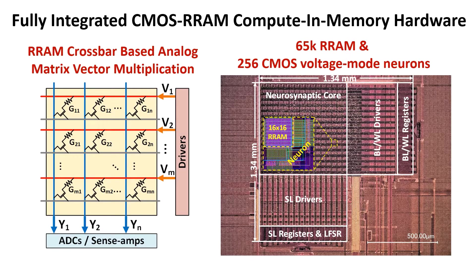In this demo, we implement MNIST image recovery using our fully integrated CMOS RM computing memory chip. The chip contains 65K RM cells and 256 CMOS voltage mode neurons. Together, they realize in-memory matrix vector multiplication in analog domain with good accuracy and energy efficiency.